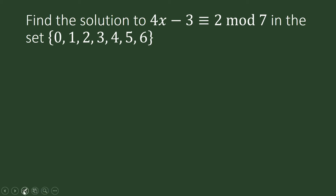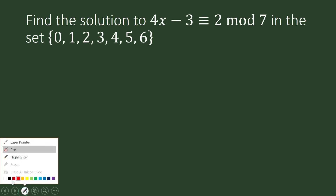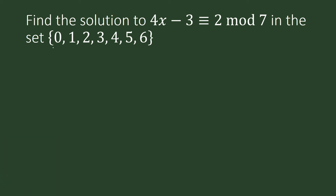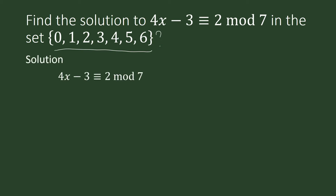Which among these is a solution to our congruence equation? We begin by adding 3 to both sides of the congruence equation, and it becomes 4x is congruent to 2 plus 3, which is 5 modulo 7. This is the part where we must look for the multiplicative inverse of 4 modulo 7.